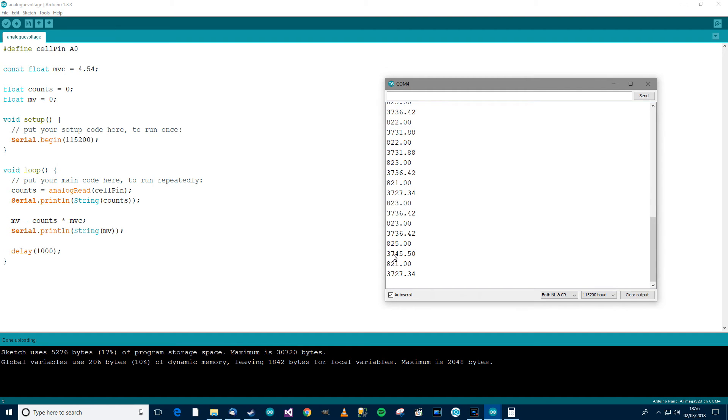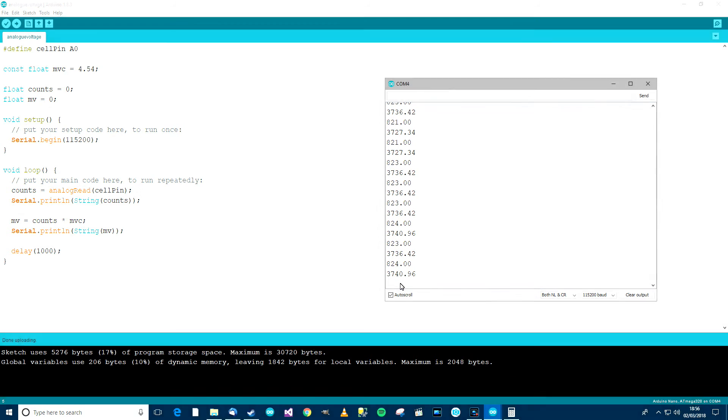And you can see here, 3700 millivolts. So 3.7 volts, or 3.73 volts, that's extremely accurate. And that's how to do it.